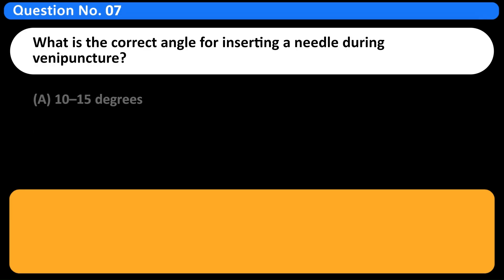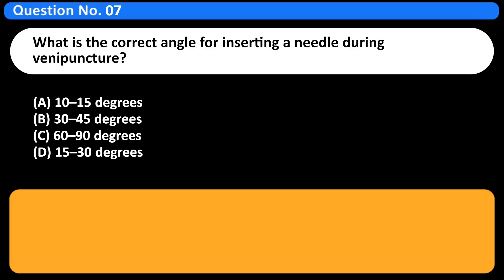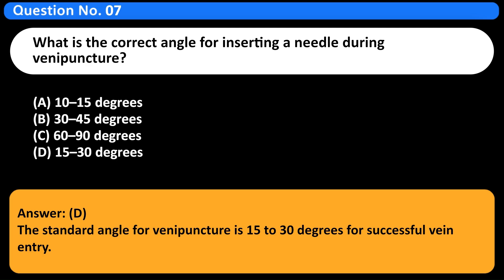What is the correct angle for inserting a needle during venipuncture? A. 10-15 degrees. B. 30-45 degrees. C. 60-90 degrees. D. 15-30 degrees. Answer D. The standard angle for venipuncture is 15-30 degrees for successful vein entry.